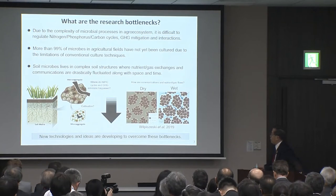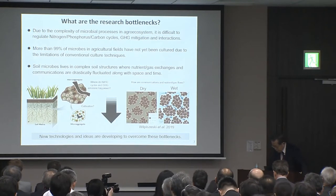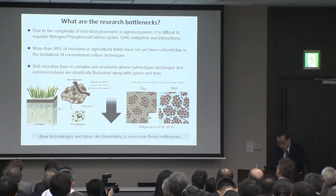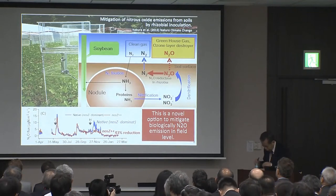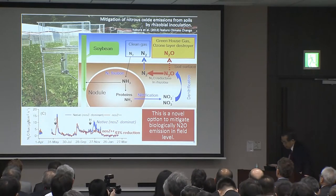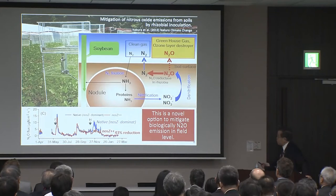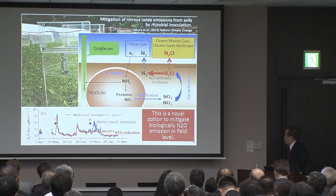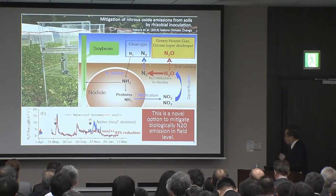New technologies and ideas are developing to overcome these bottlenecks. I will now touch on five successful results in Japan. Nodule decomposition is the main source of N2O in soybean rhizosphere, where soil microbes mediate nitrogen transformation from nitrification and denitrification, and this N2O gas is released to the atmosphere. However, some rhizobia reduce N2O to N2 and reduce N2O emission from the field. We used rhizobia carrying strong N2O reductase activity.